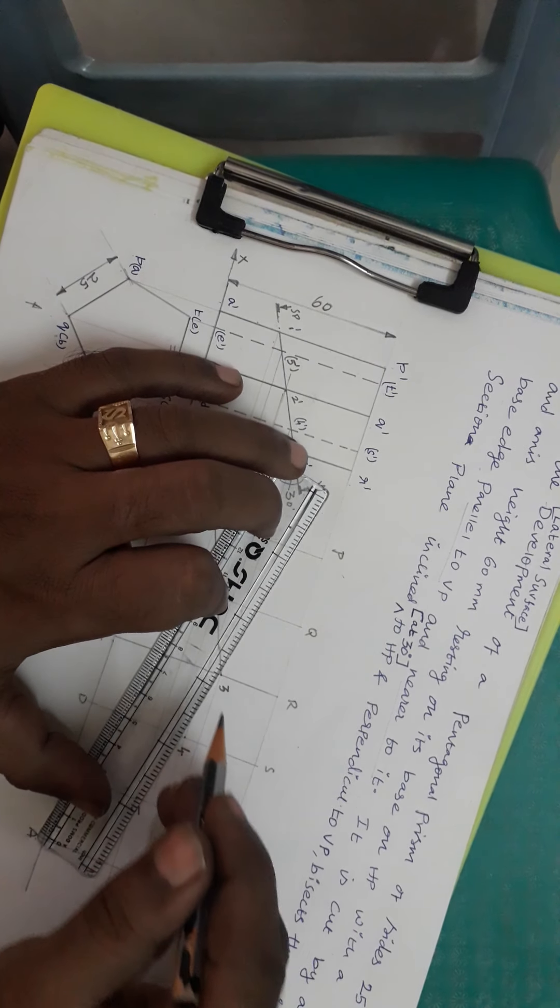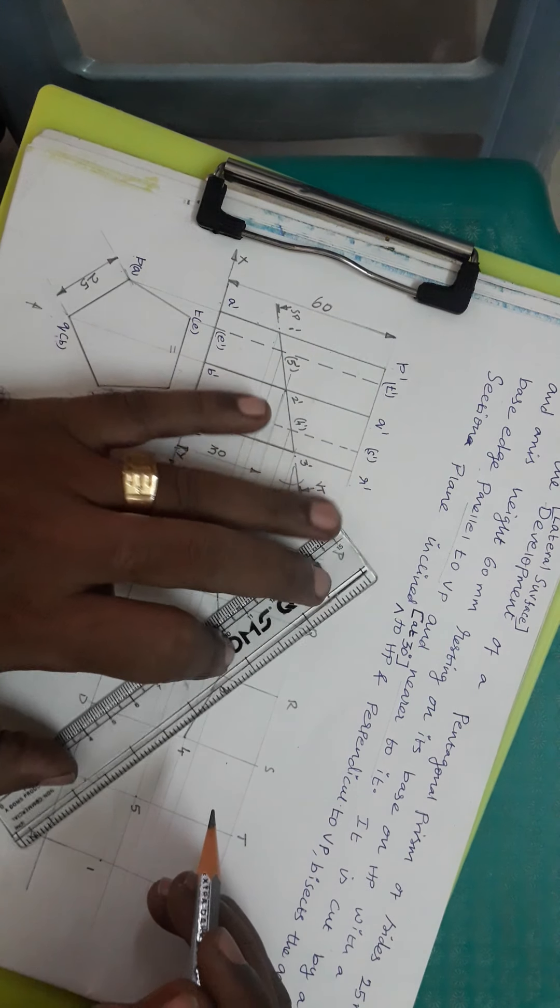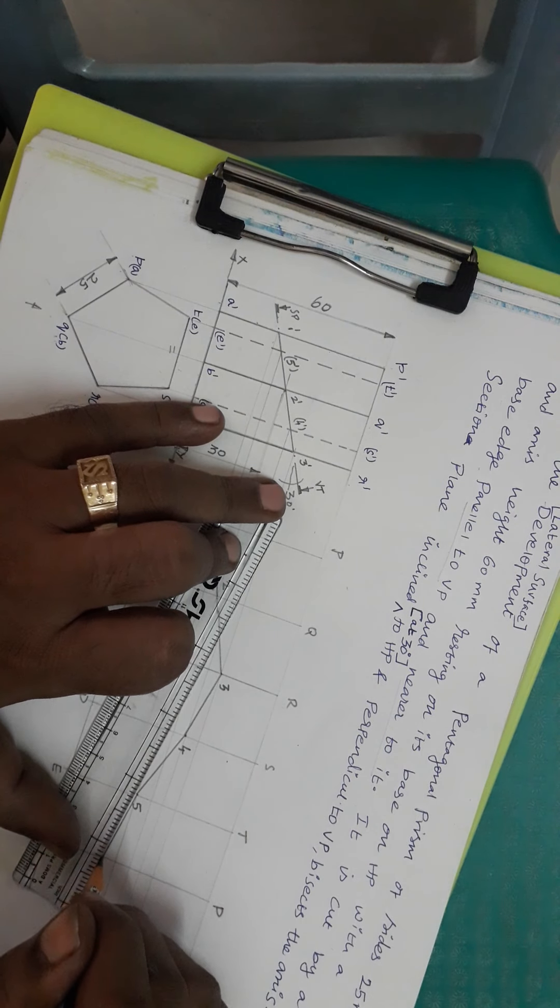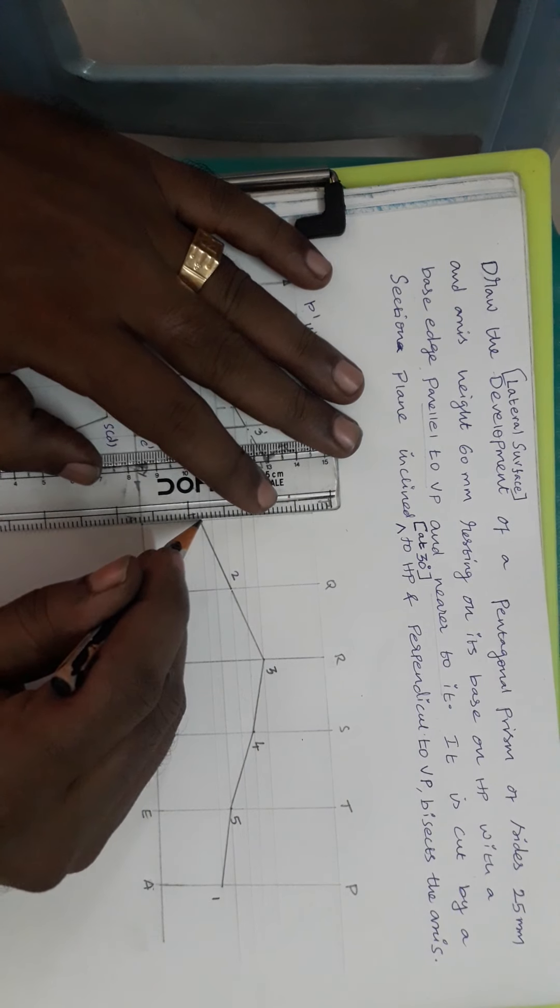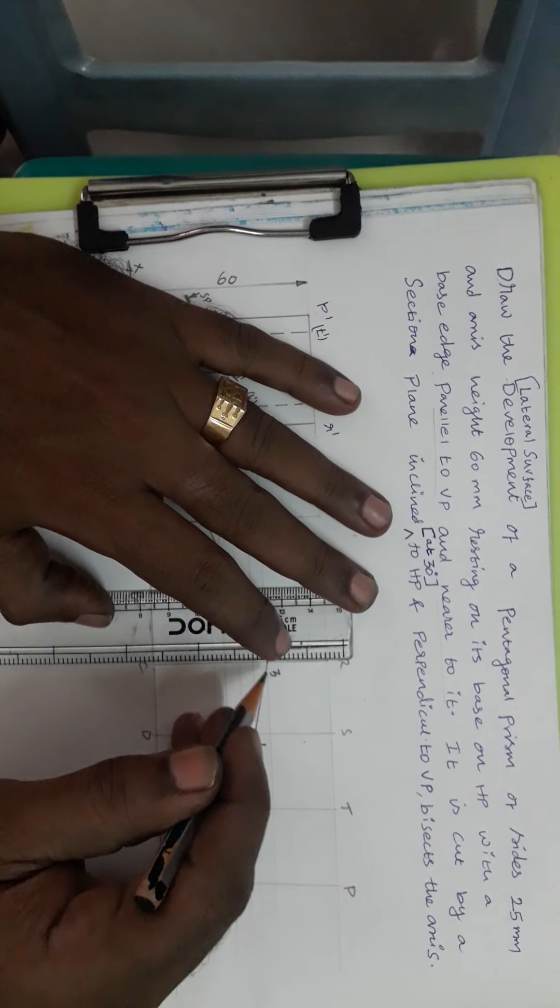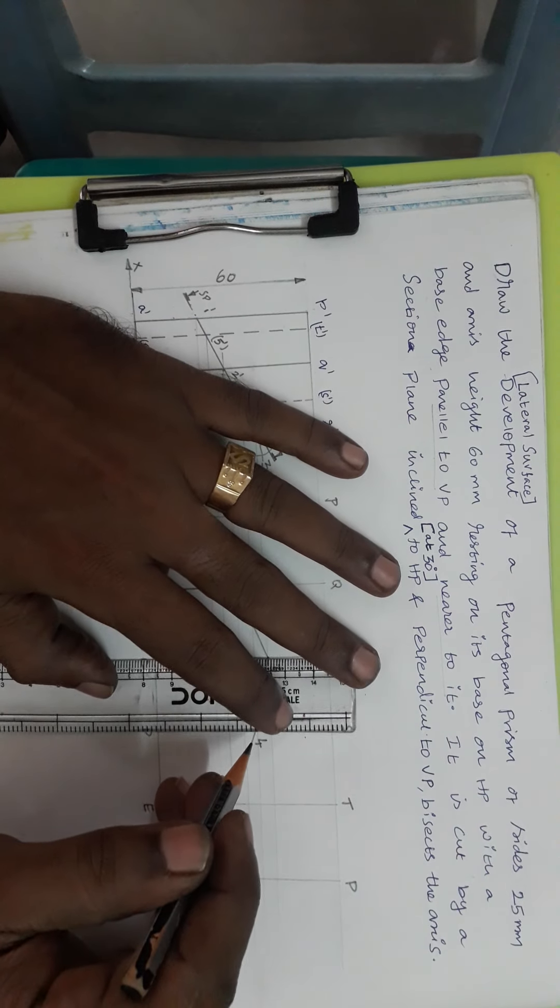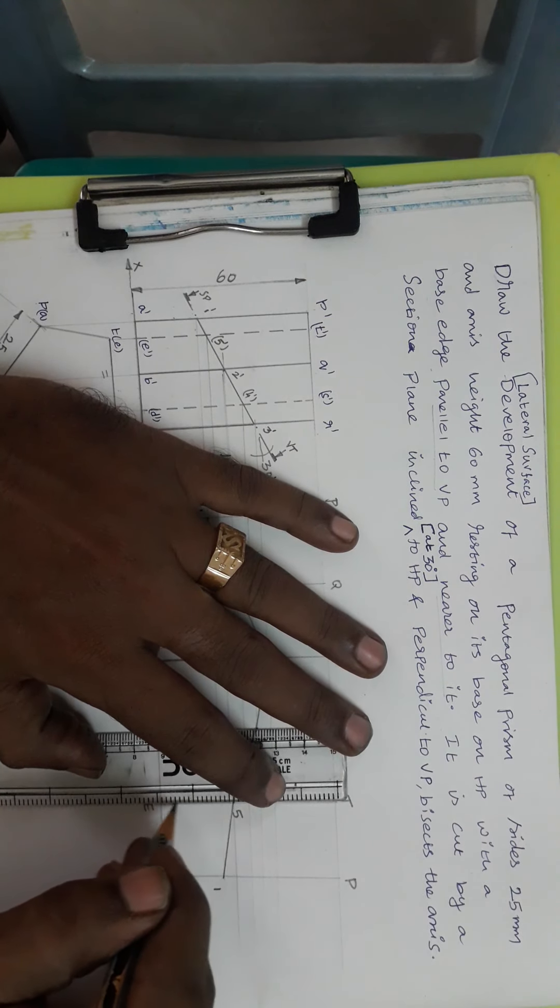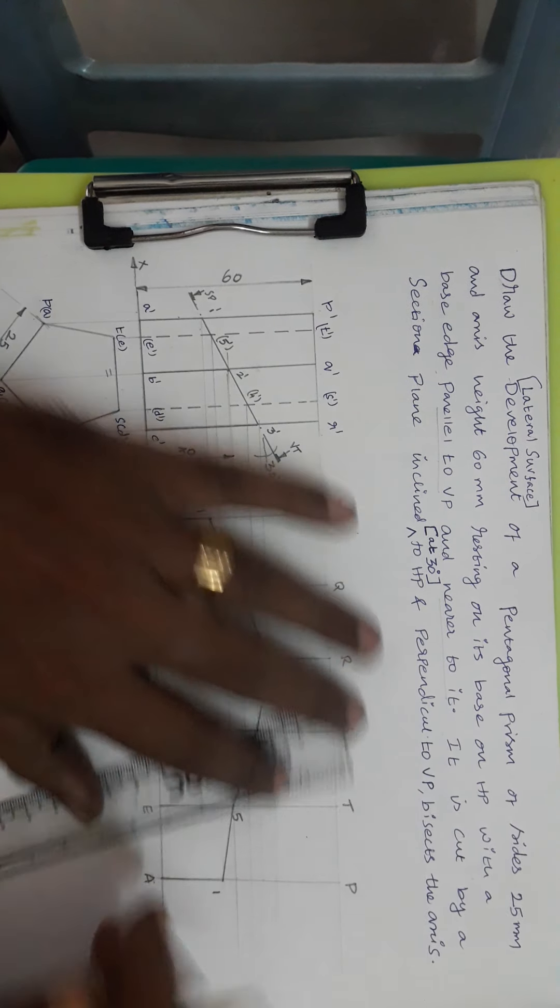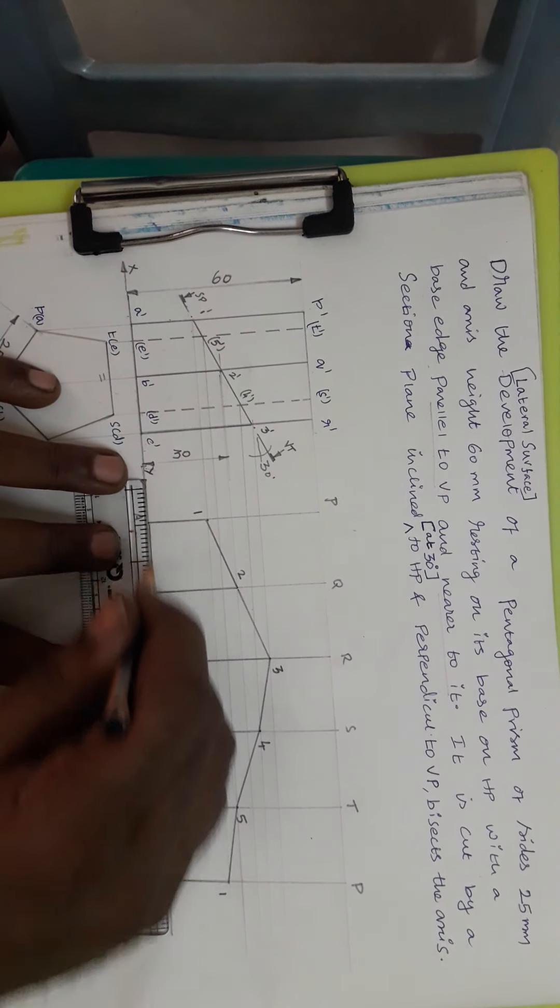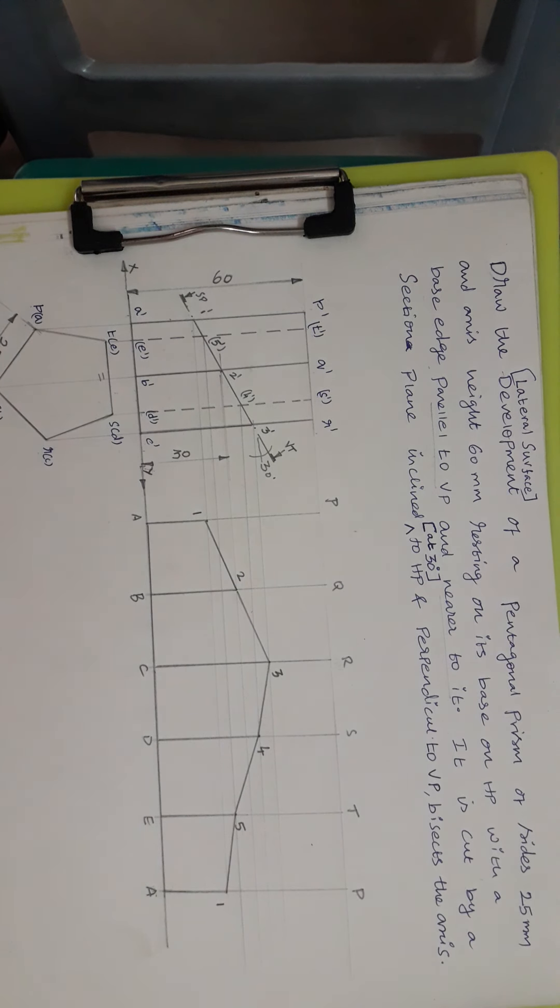Now we can see that this is our required portion. The meaning for this is if we draw this pattern in the sheet metal or in the paper and if we cut the darker portion, if we cut and if we fold it, we will get the prism of this pattern with the cutting plane. Thank you.